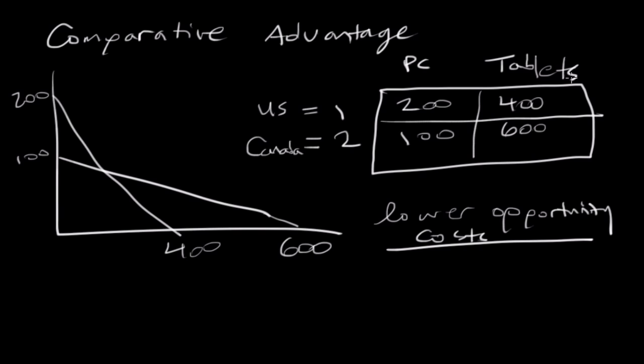The way to approach this is by first assessing the PPF, or the production possibilities frontier. Looking at this, we see that we have this capability for the U.S. here, and then we have Canada's PPF here. What we need to look at is what is the opportunity cost for the U.S. to create PCs, and what's the opportunity cost for the U.S. to create tablets.